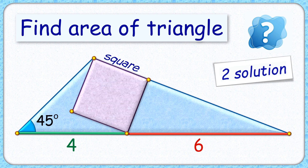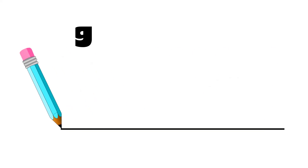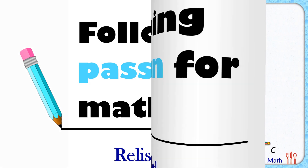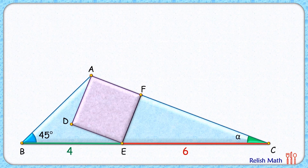In this interesting and challenging question, we have a square inside a triangle with one angle of 45 degrees and one side of 4 plus 6 centimeters. The exciting part is that with this limited data, we have to find the area of the triangle. Let's check this simple and elegant solution.